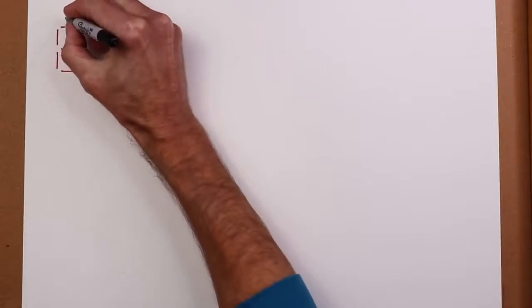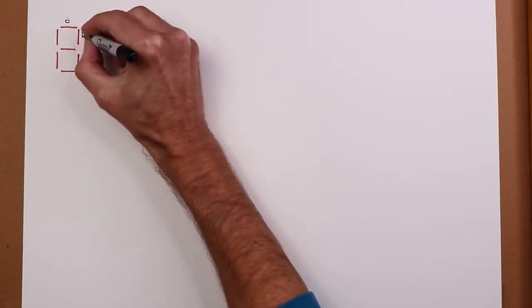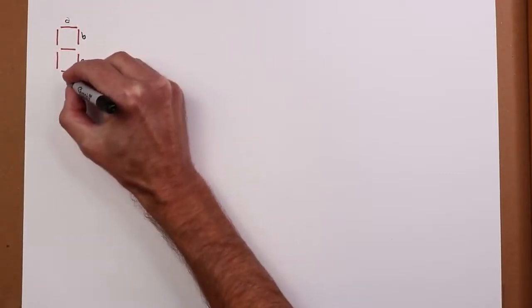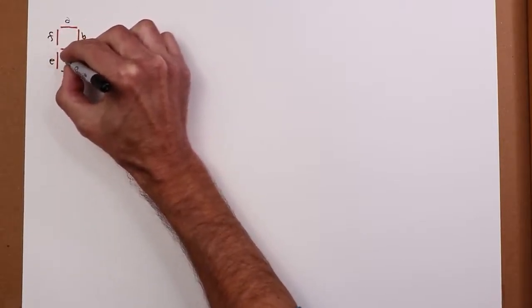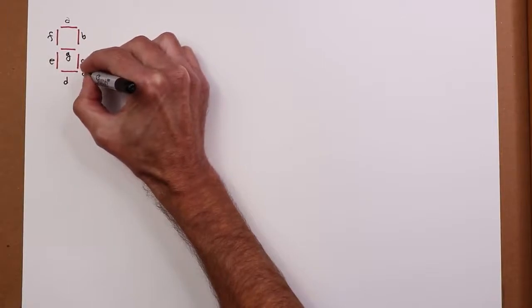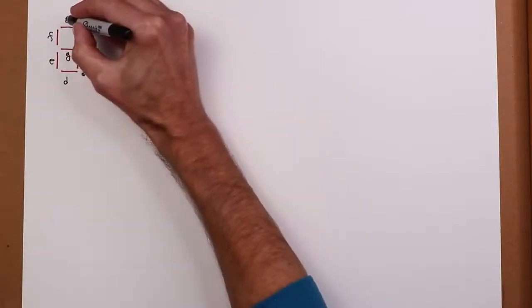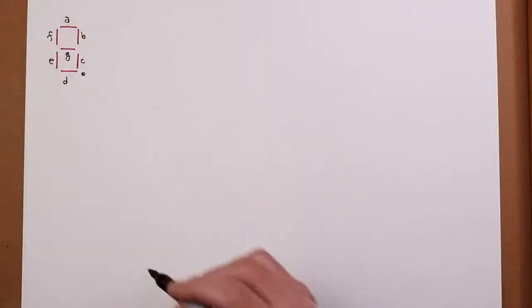And typically they are indicated with letters, segments A, B, C, D, E, F, G, and then of course the decimal point if we have it down there.